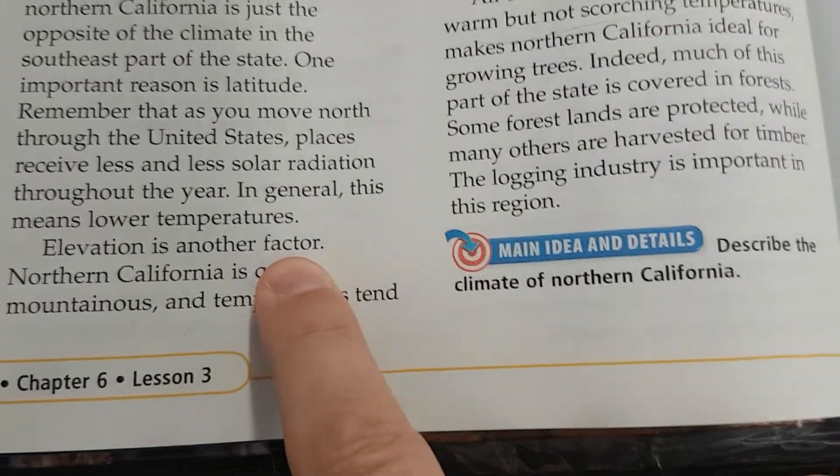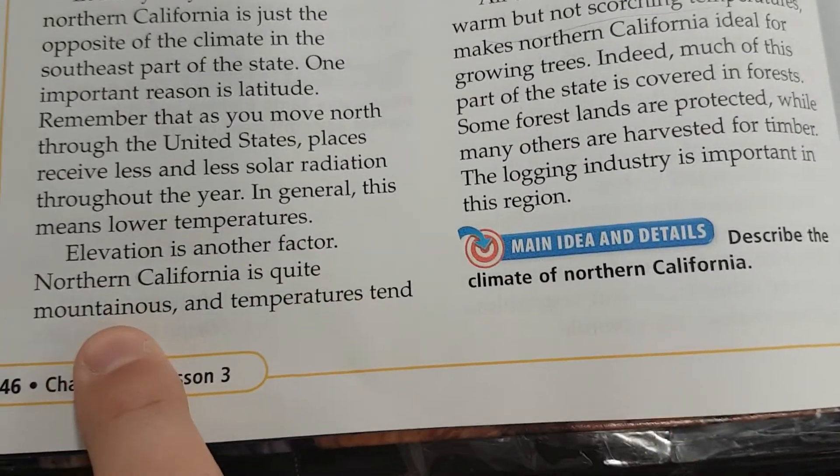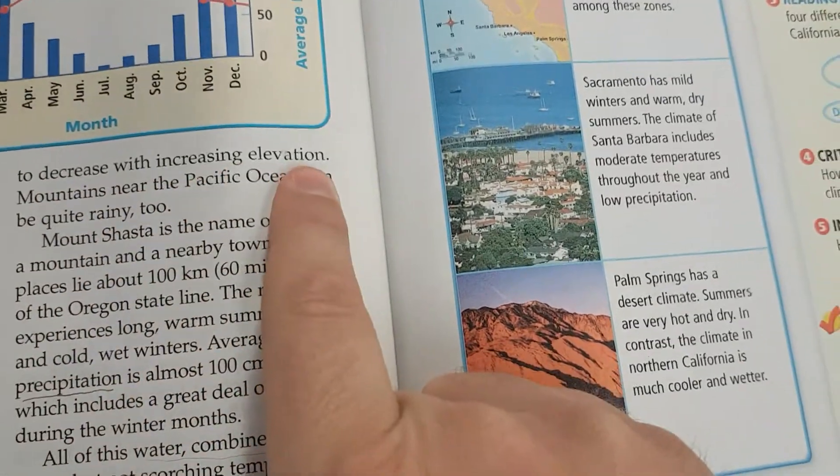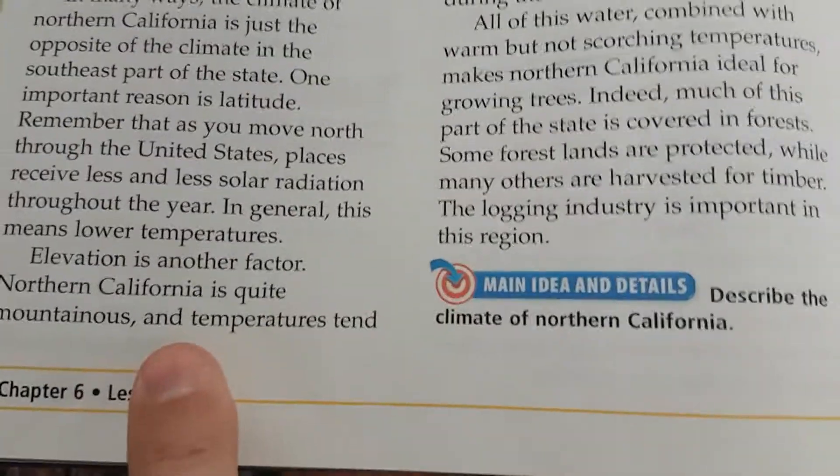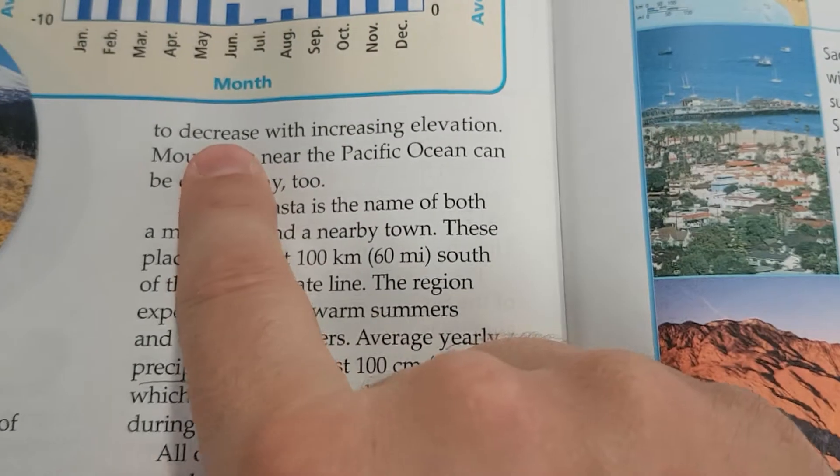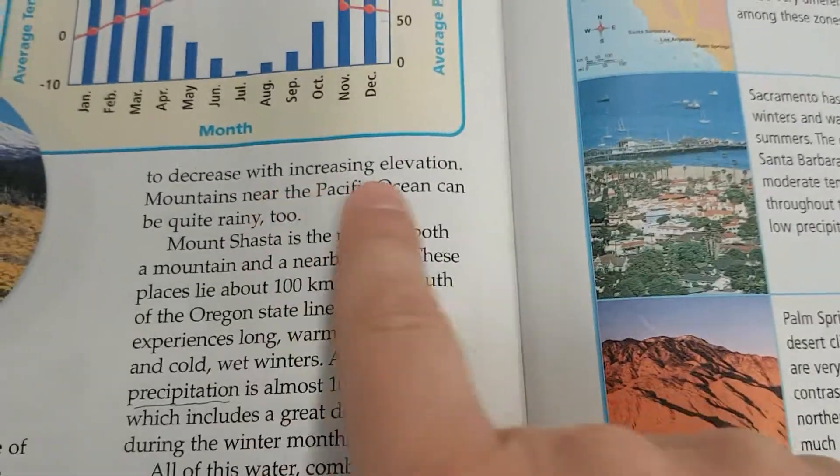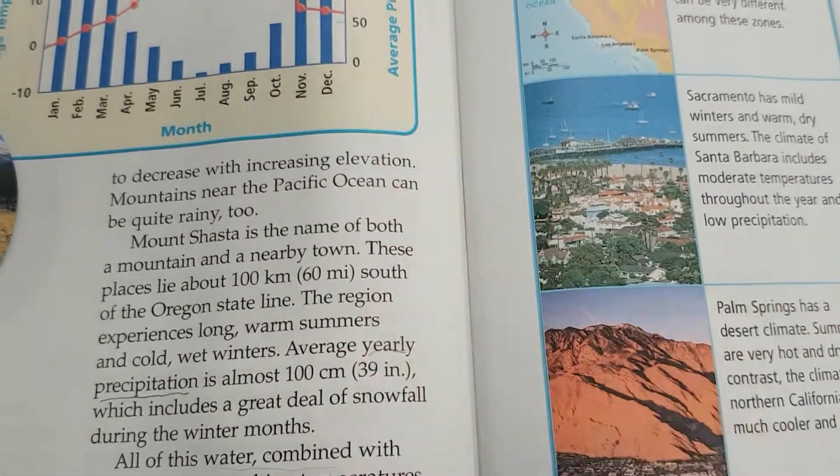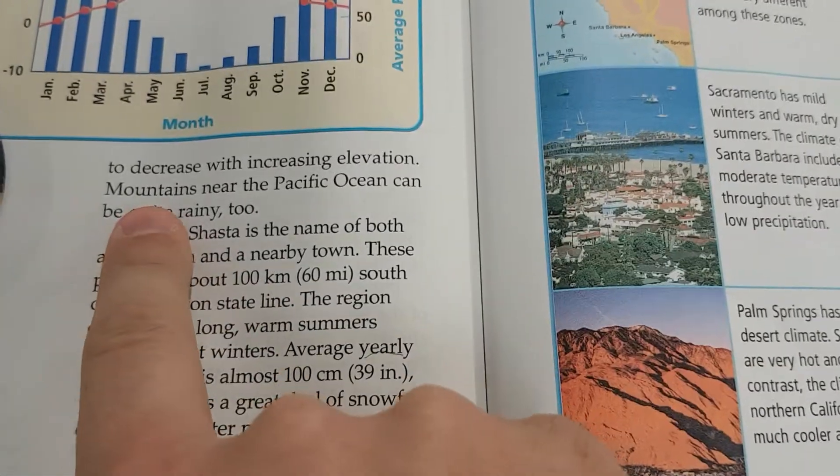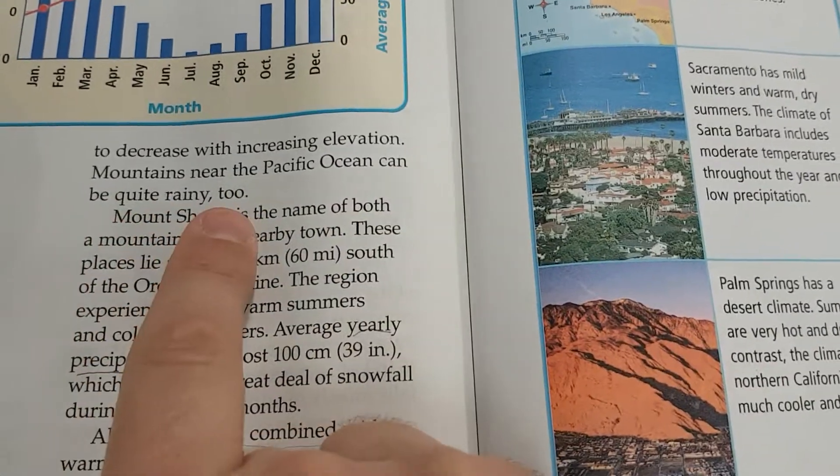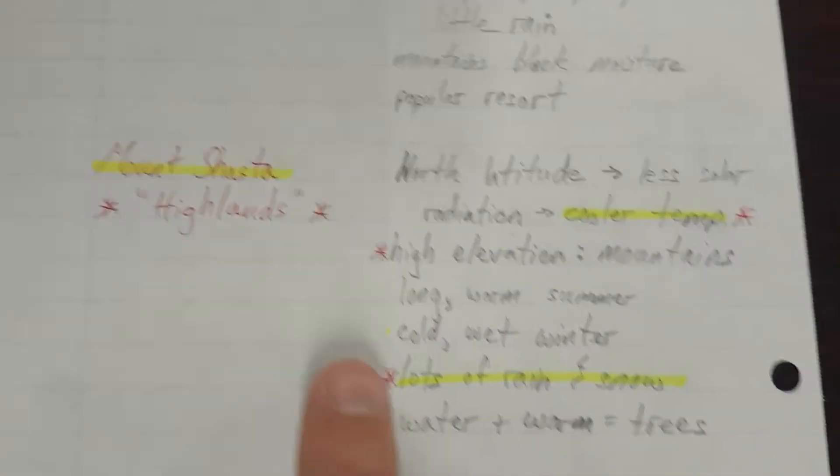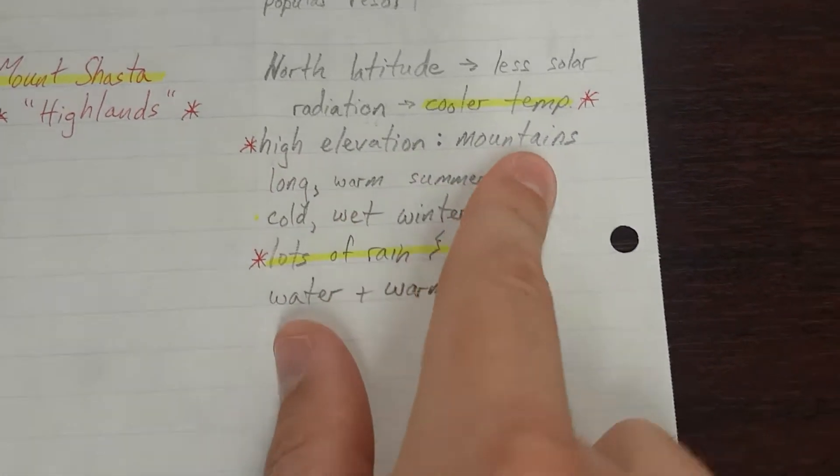Elevation is another factor. Northern California is quite mountainous and temperatures tend to decrease with increasing elevation. Look at that again. Temperatures tend to decrease or go down or get colder with increasing elevation as you get higher in the mountains. Mountains near the Pacific Ocean can be quite rainy too. So high elevation, mountains.